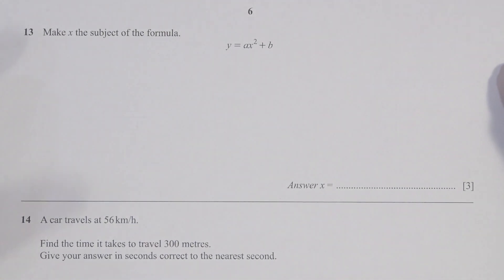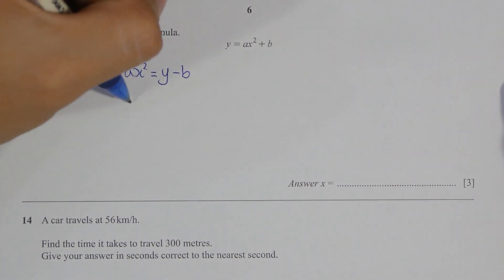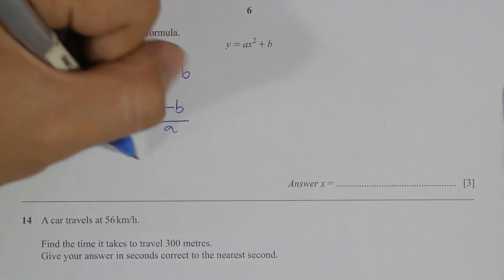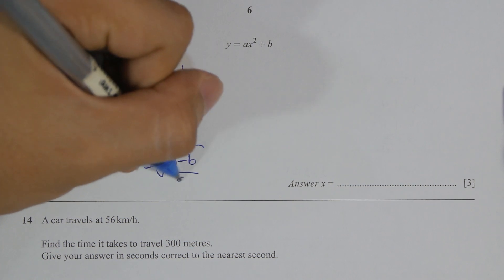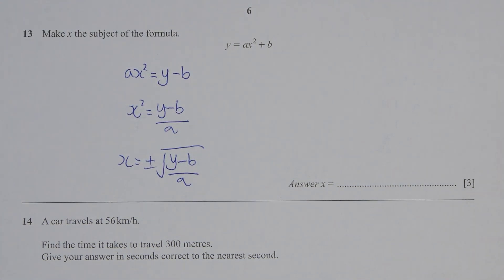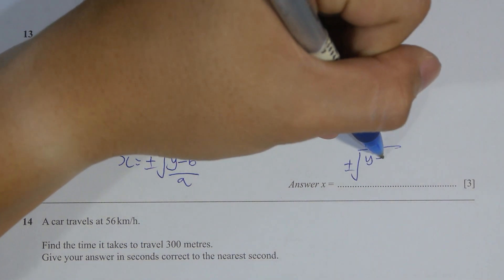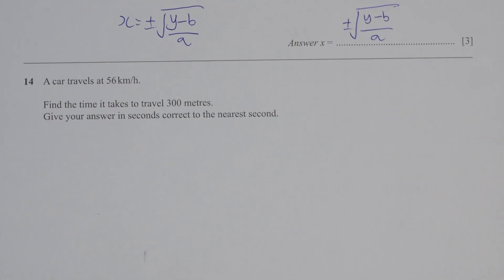For question 13, the first thing I did was shift B to the other side, then remove A from the equation by shifting it to the other side as well. So X squared equals (Y minus B) over A. In order to get rid of the square, simply take the square root of (Y minus B) over A.